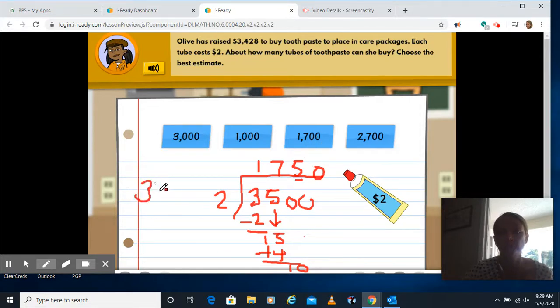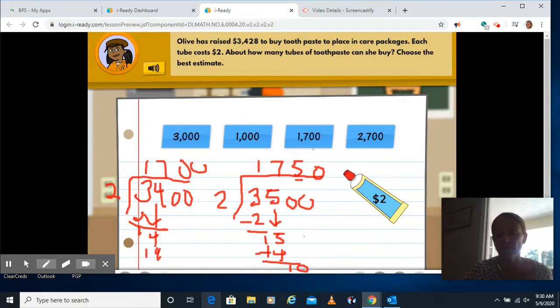I also could have rounded it down to 3,400 and divided that by two. That probably would have been a better estimate. Two goes into three once. We have one, bring down the four. Two goes into 14 seven times and that's a better estimate. And then I'd have my zeros and end up with 1,700.